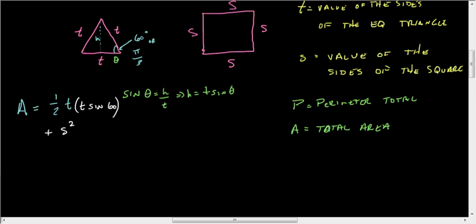Just to rewrite this, I'm going to get A equals one half T squared sine of 60, which I can actually go ahead and do. This is square root of 3 over 2. I'm going to combine that with the half, since that does not change. So this is square root of 3 over 4 T squared plus S squared.